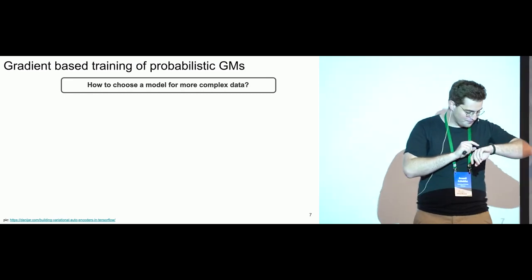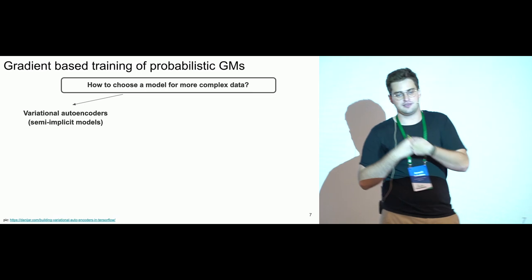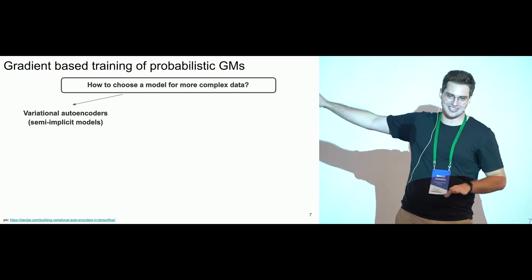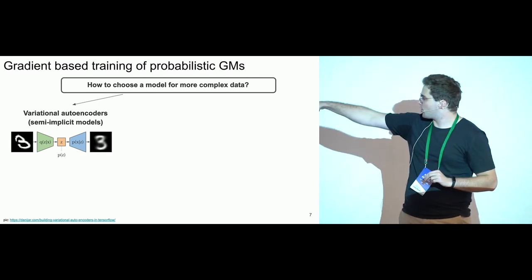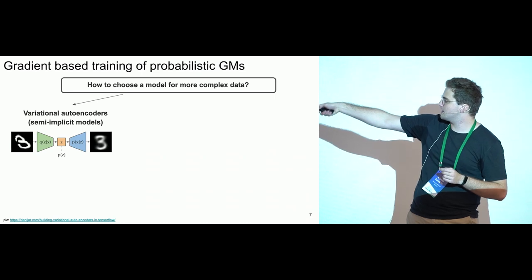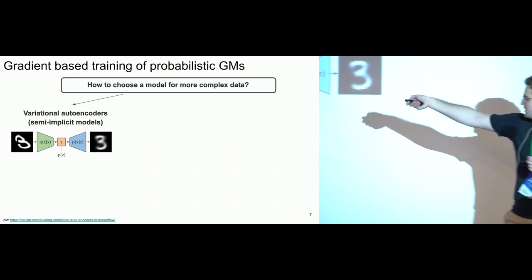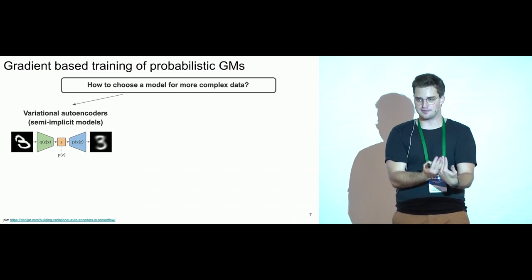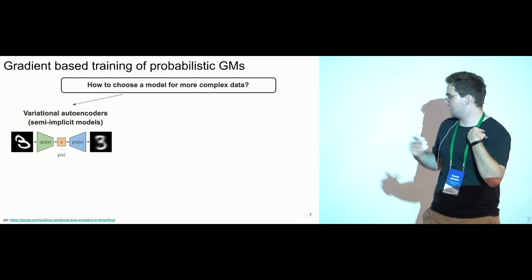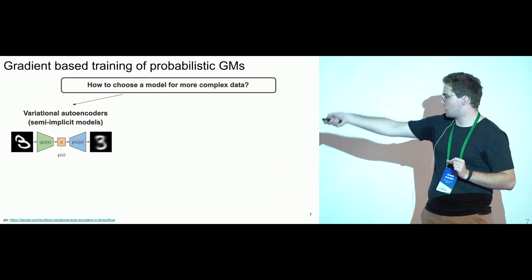This approach scales to much more complex data. But the question is: how do we choose a model for complex data? One example is variational autoencoders — this method is very similar to VAEs, so let's draw the connection.